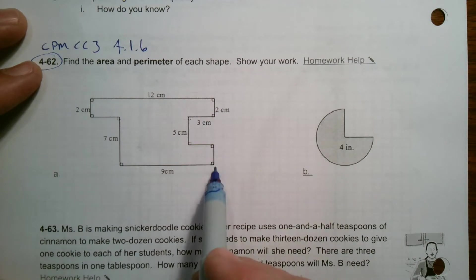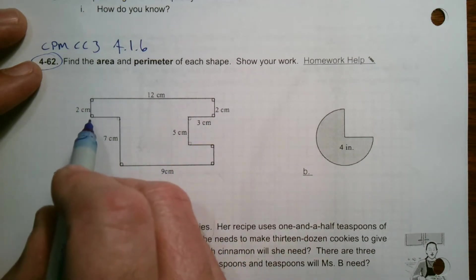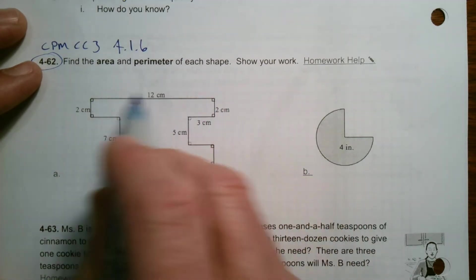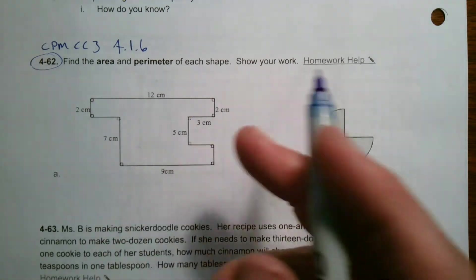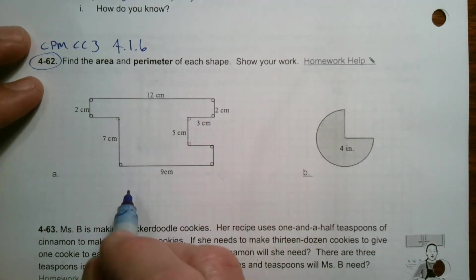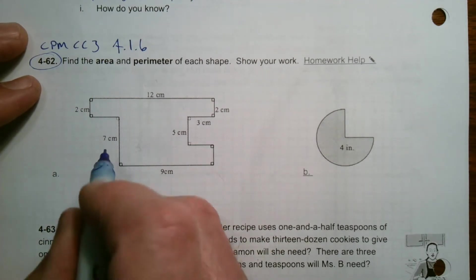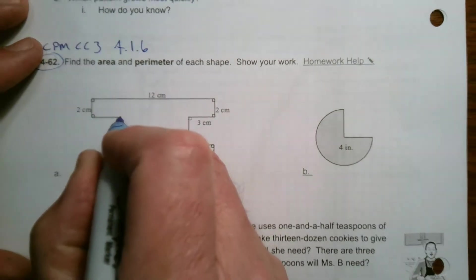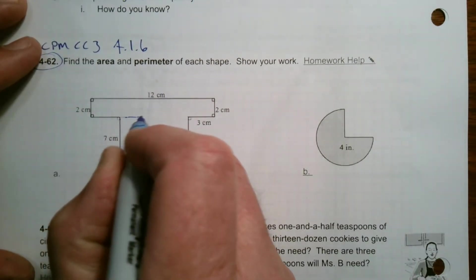You could look at this large rectangle and then subtract the two smaller areas, right? That's one way to find area. The other way would be to cut it up inside and have the different figures inside. I'm going to do it that way, and I like to use as least amount of cuts as possible.